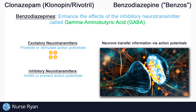Inhibitory neurotransmitters are the opposite — they are kind of the downers, the ones that slow down or prevent action potentials. The neurotransmitter called GABA is actually the main inhibitory neurotransmitter in the central nervous system. Just to simplify things, let's say that GABA are these little green dots. GABA reduces the excitability of neurons, which slows down the transfer of information.